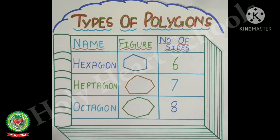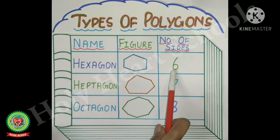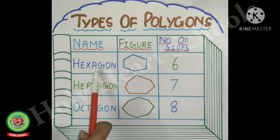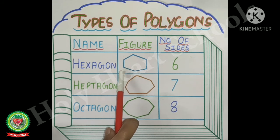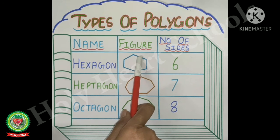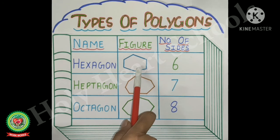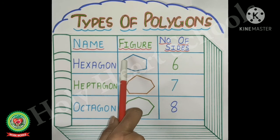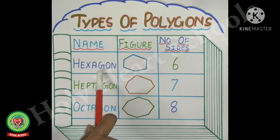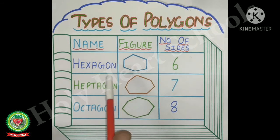The next type of polygon is the polygon which has six sides. That polygon is called a hexagon. The figure of the hexagon has one, two, three, four, five and six sides. So it is called a hexagon.